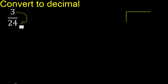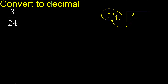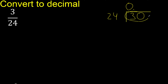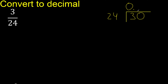3 divided by 20. Since 3 is less than 20, we complete with 0. We have 0.0, and 30 is not less than 20, so we proceed. 24 multiplied by what number is nearest to 30?